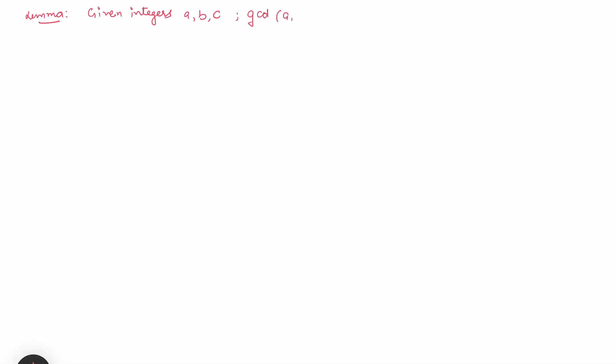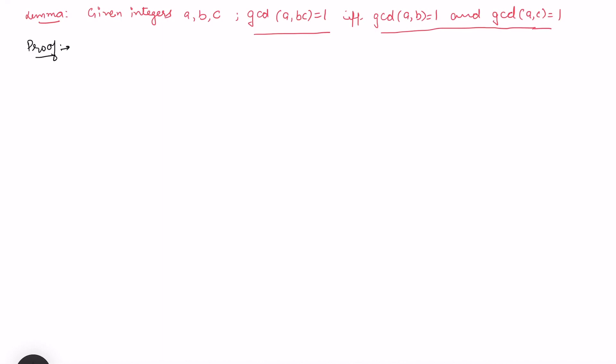What is the lemma? The lemma says that if we have three integers a, b, c such that gcd(a, bc) = 1, then this holds if and only if gcd(a, b) = 1 and gcd(a, c) = 1. We want to prove both directions. Let's prove this lemma first before we prove that the Euler phi is a multiplicative function.